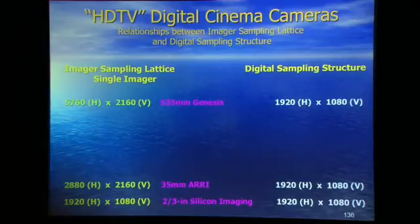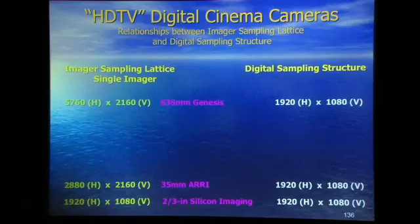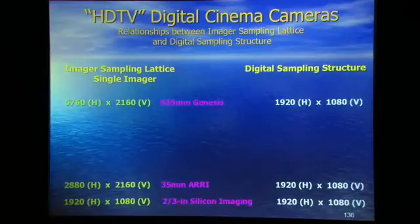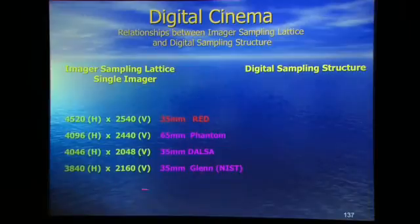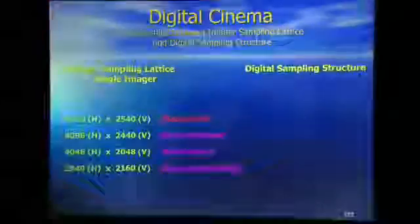They break into two camps. There are those single-sensor cameras that are HDTV in their primary delivery — Genesis, for example. Its primary digital delivery is 1920x1080 HDTV production standard. Two-thirds-inch silicon imaging delivers 1920x1080; ARRI will deliver you 1920x1080. Then there are the other cameras that call themselves digital cinema cameras — they don't like to be labeled HD per se, though some do also deliver a derived 1280 or 1080 HD.